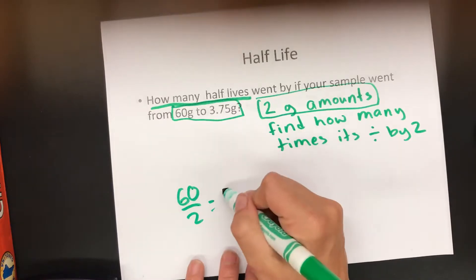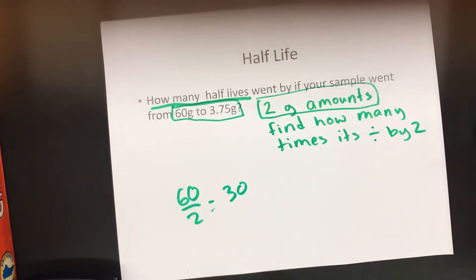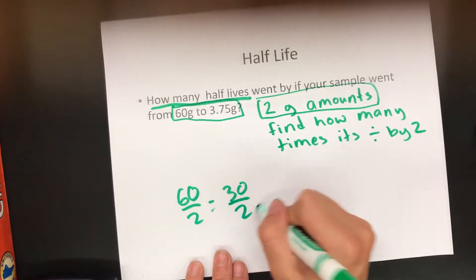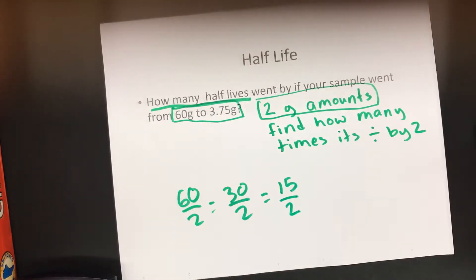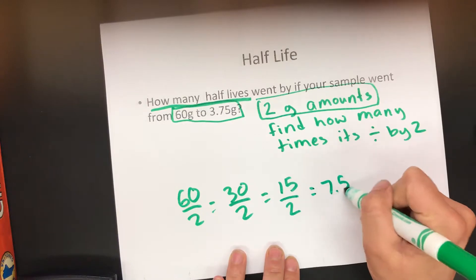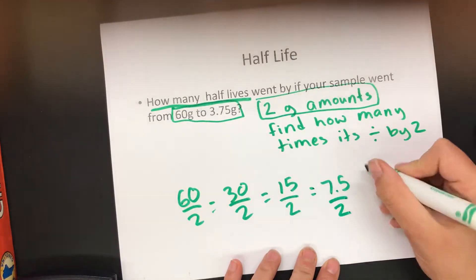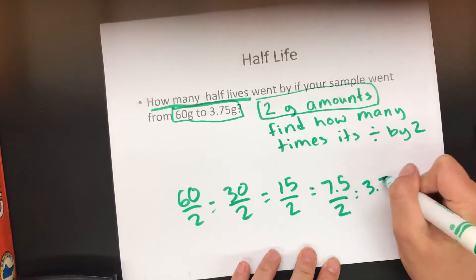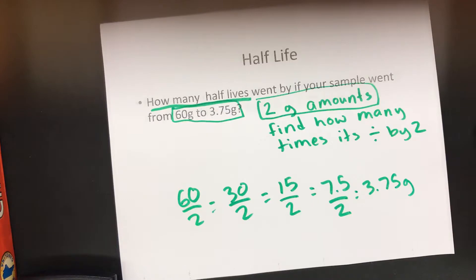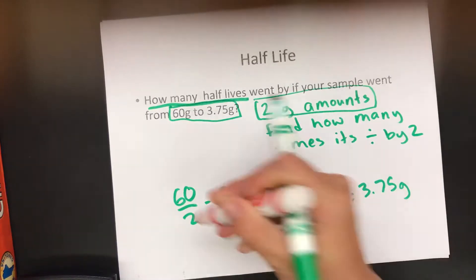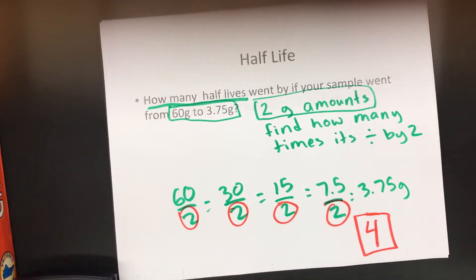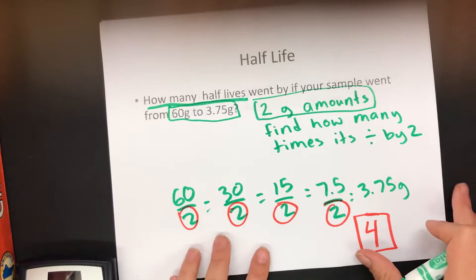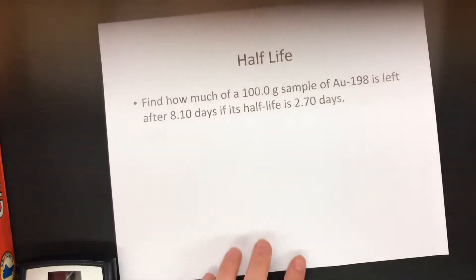Take 60 — one half-life goes by, you get 30. Not the final number. Another half-life: 15. Still not the final number. Another half-life: 15 divided by 2 is 7.5. Still not there. Divide by 2 again and you get 3.75. So how many times did it take to divide by two? It took four times. Your answer is four half-lives. That's all the question is asking for.